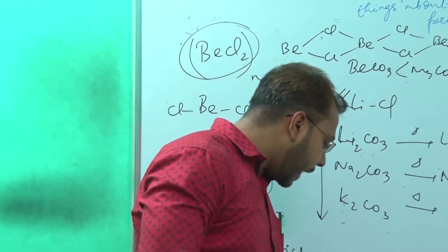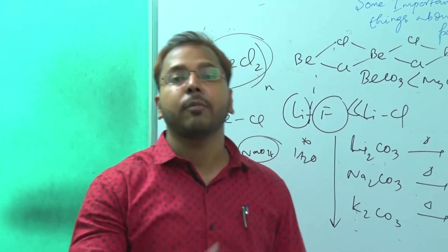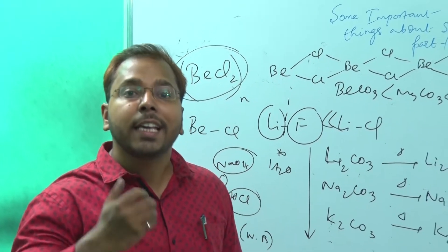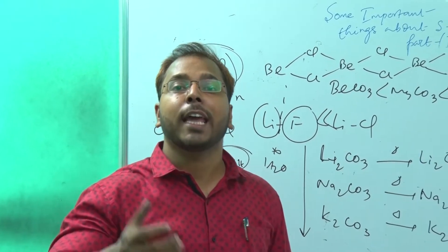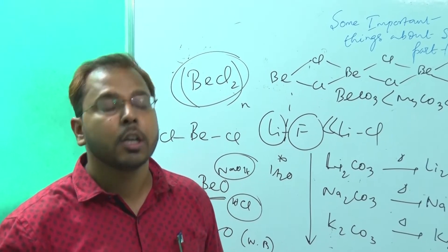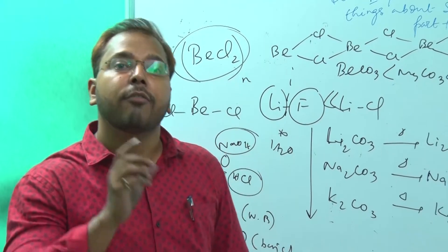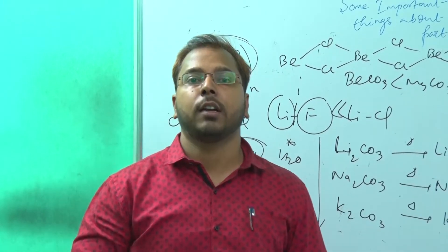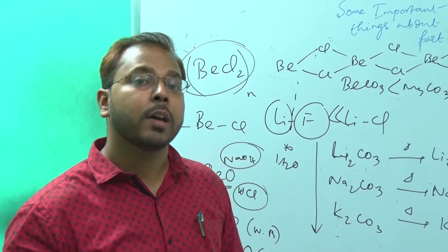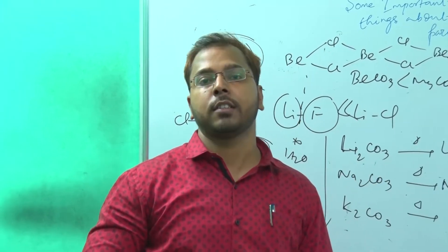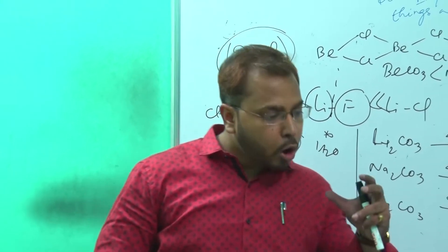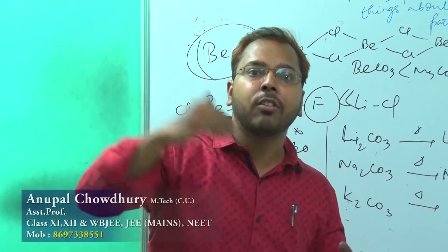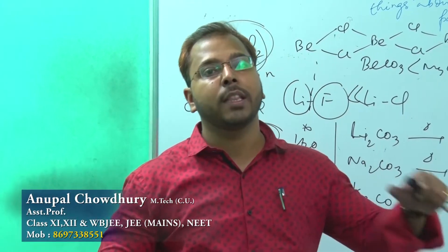Why are alkali metals not found in the free state? Because they have low ionization energy, making them very reactive — they easily donate electrons and readily react with oxygen, sulfur, and other elements, forming compounds like Na2O instead of remaining as free sodium. Noble metals like platinum, palladium, gold, and silver are much less reactive, so they can be found in the free state and hence have higher cost. To store alkali metals safely, they are kept in kerosene so that oxygen cannot penetrate the kerosene layer and react with the metal.